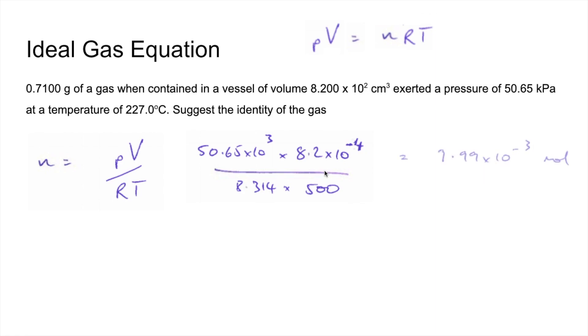So the number of moles comes out at 9.99 times 10 to the minus 3 moles. And then to work out the MR, mass over moles, 71 grams per mole. And so this gas is chlorine.